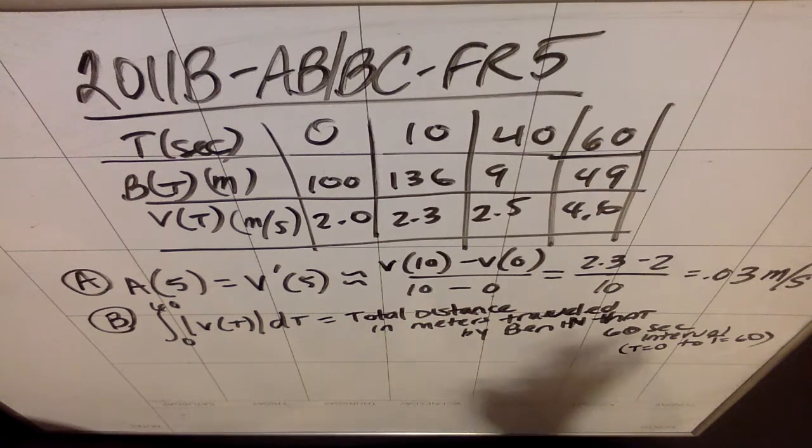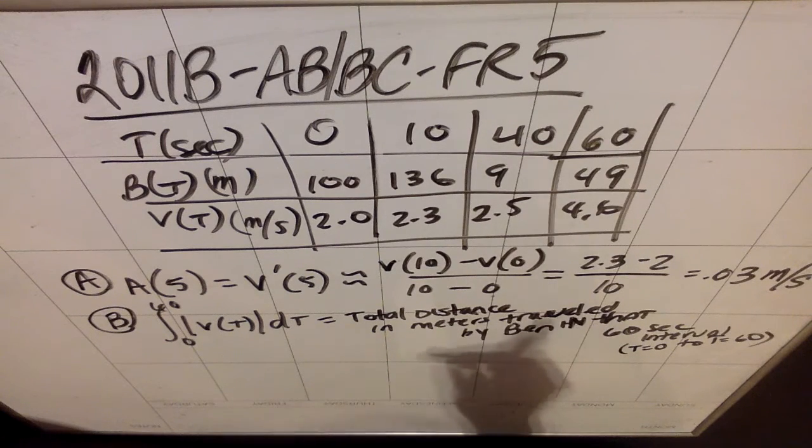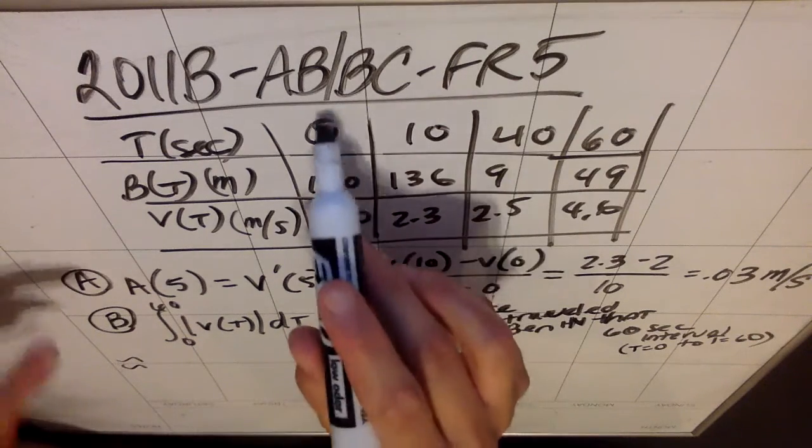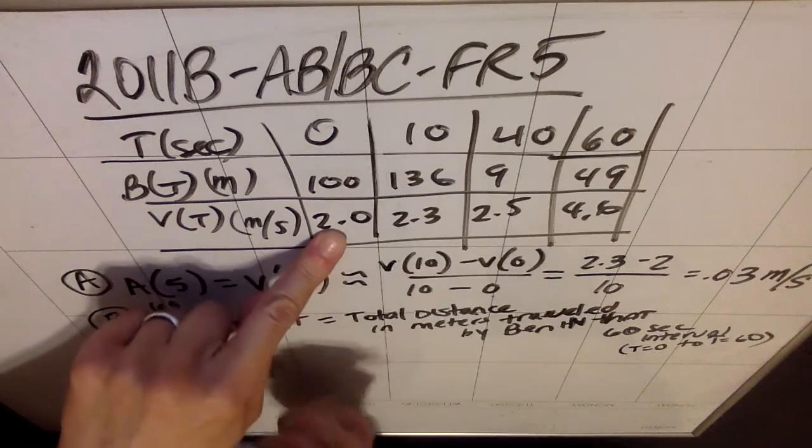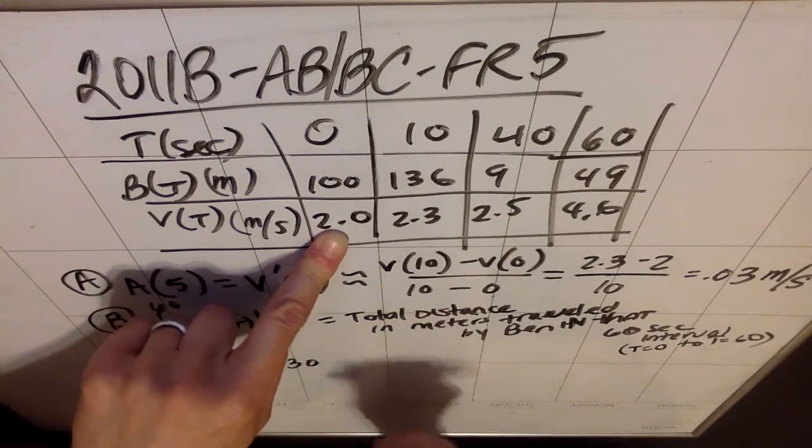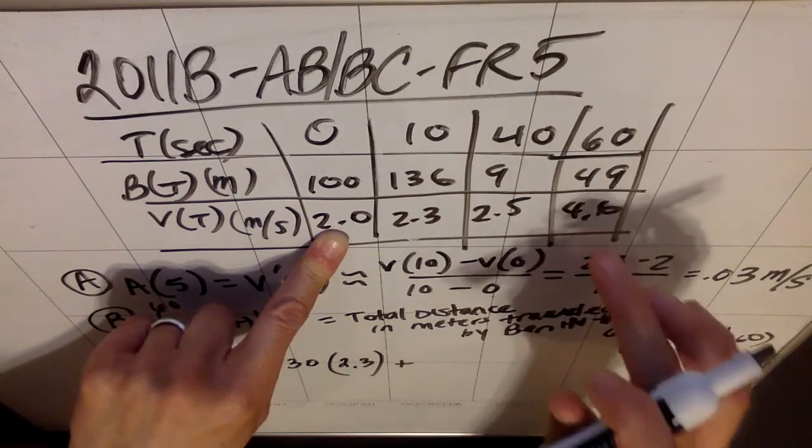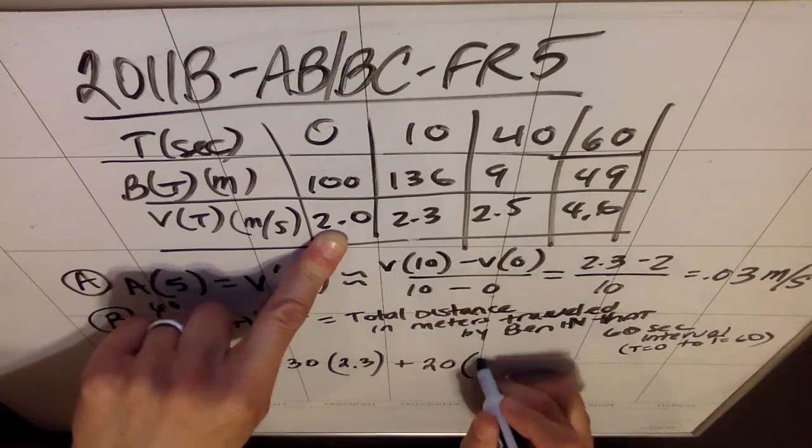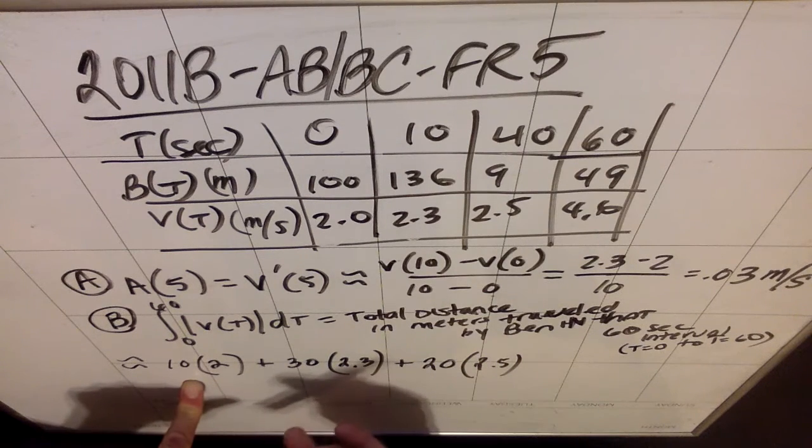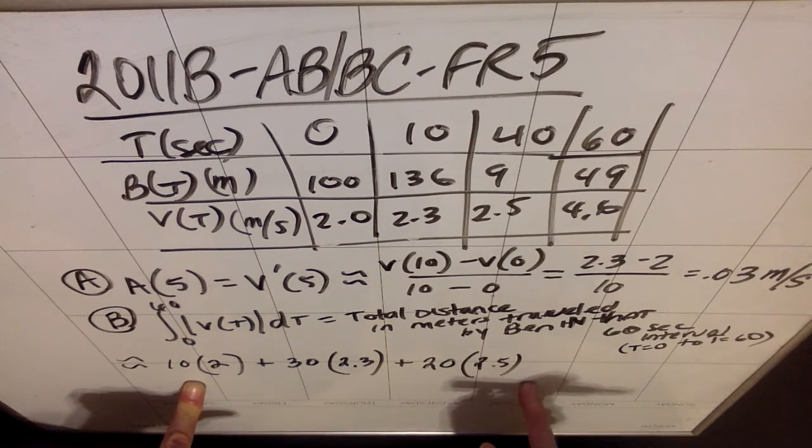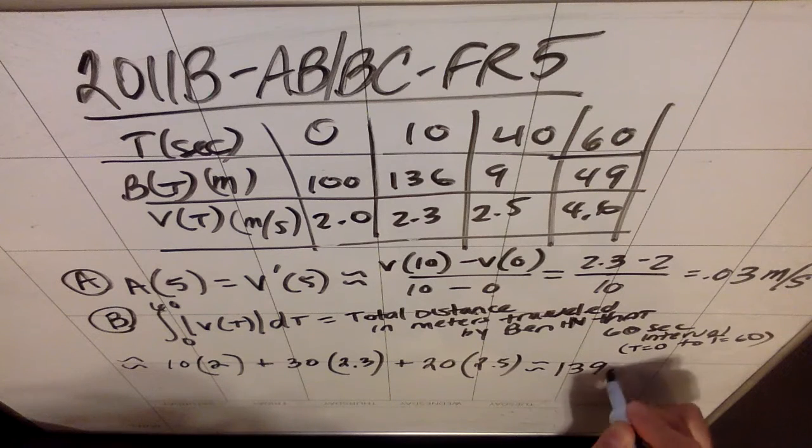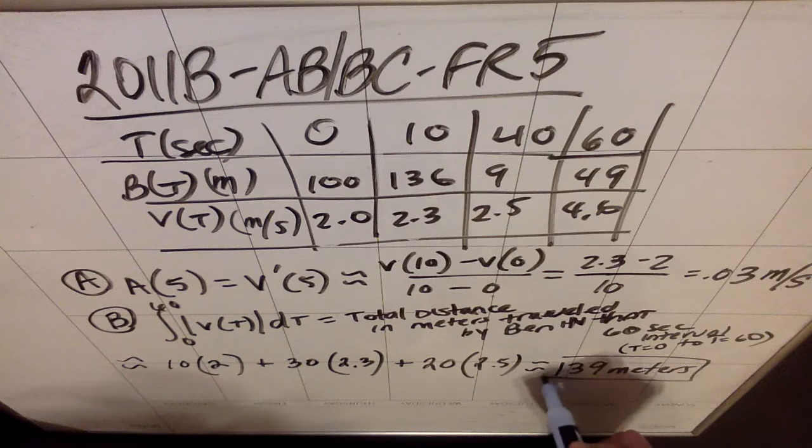Then I'm supposed to actually approximate it. Approximate the integral from 0 to 60 of v(t) dt using a left Riemann sum with the subintervals given by the table. So my left Riemann sum is going to be: I'm going to take the width of each box, the width of 10, and then I'm going to use the left of the two y values, which in this case would be 2. Plus I'm going to take the width of the next box, which would be 30 because it goes from 10 to 40, and then the left of the two y values, which is going to be 2.3. And then I'm going to take the width, which is 20 from 40 to 60, and then the left of the two values, which would be the 2.5. So that's going to be 20 plus 69 plus 50, so I have 70 and 69, so I should get 139 meters. That's how far, that's a lot of unicycling, Ben. Good job.